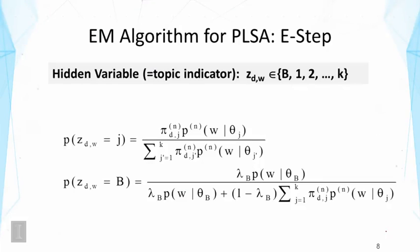We can compute this maximum likelihood estimator by using the EM algorithm. In the E-step, we now have to introduce more hidden variables because we have more topics. Our hidden variable z, which is a topic indicator, can take more than two values. Specifically, it will take k plus one values with B denoting the background, and one through k to denote all the k topics.